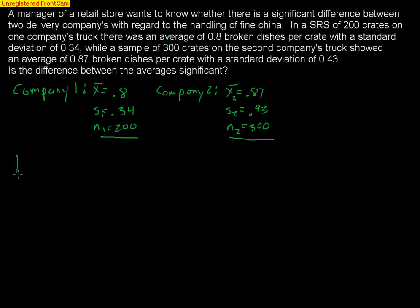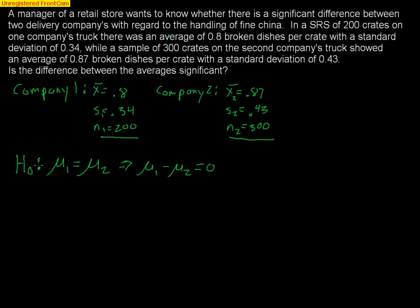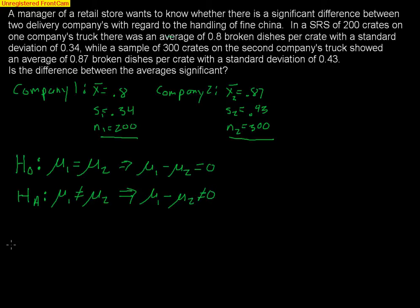Our null hypothesis is that the true averages for the two companies are exactly the same — there is no difference. We can express that as the true average for company one equals the true average for company two, or equivalently, the average for company one minus the average for company two equals zero. The alternative hypothesis is that the true average for company one is not equal to the true average for company two — i.e., the difference is not equal to zero. Since the problem just asks if there is a difference, this is going to be a two-tailed test.